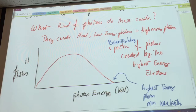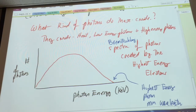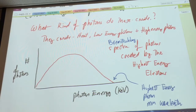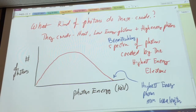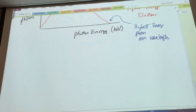That's really called the Bremsstrahlung spectrum, because that's the process by which those x-ray photons were created — the Bremsstrahlung stopping process. Now there's another way that we can create x-ray photons.